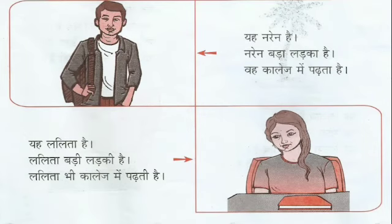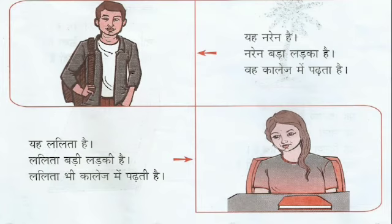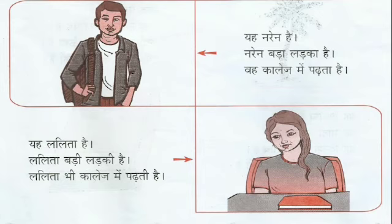He is a big boy. His name is Nareen. Nareen Baada Ladukha Hai — Nareen is a big boy. Woh college mein padta hai — He is studying in the college. Lalitha Hai — She is Lalitha. Lalitha Badi Ladukhi Hai — She is a big girl. Lalitha bhi college mein padti hai — She is also studying in the college.